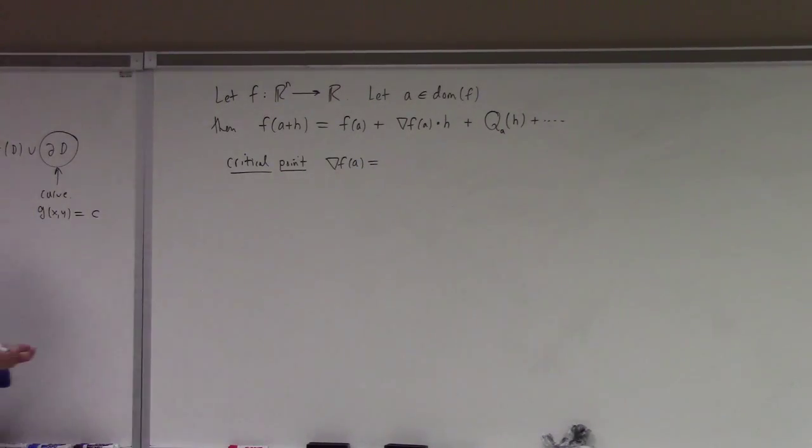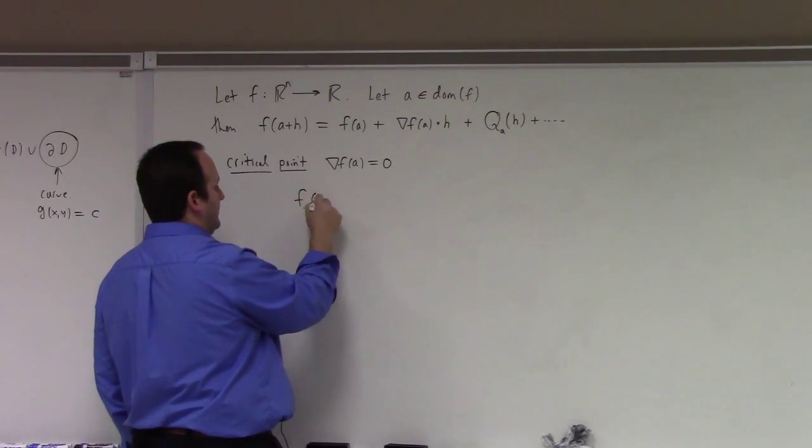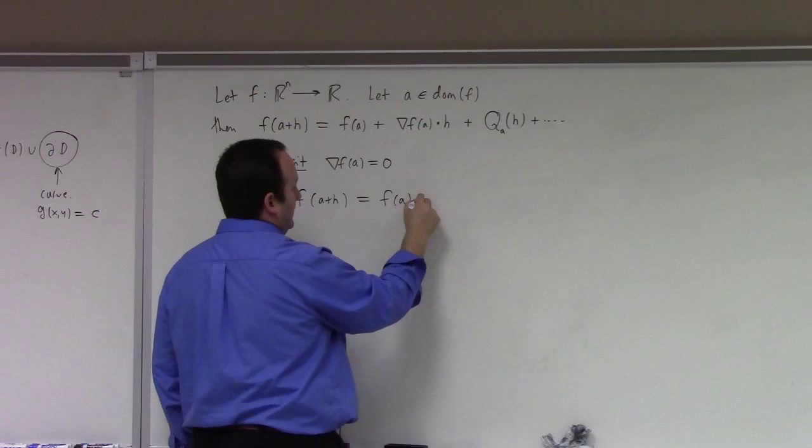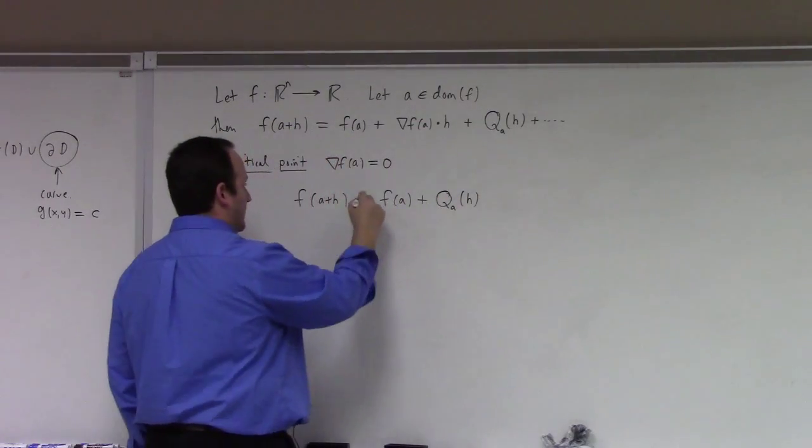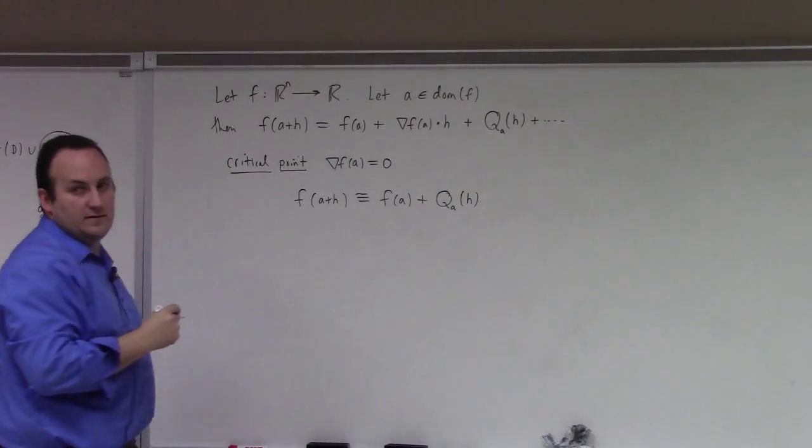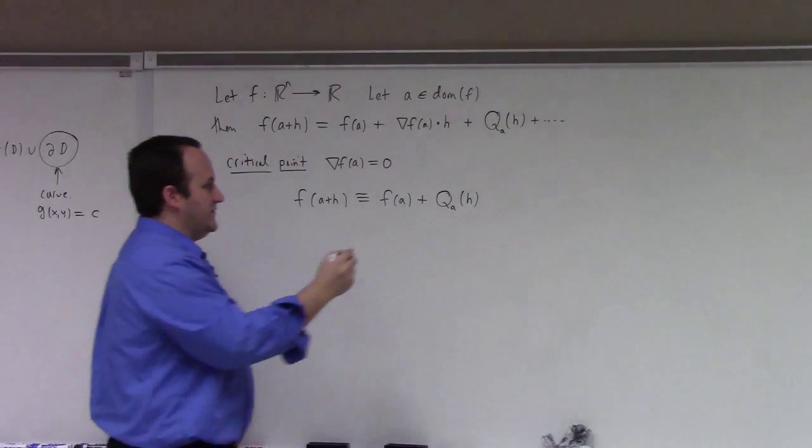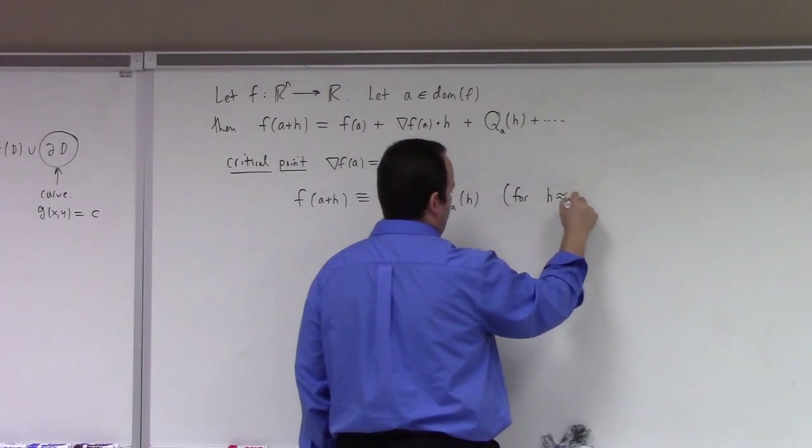Okay, so then what? So if this is zero, that means that the function, F of A plus H, is equal to F of A plus the quadratic piece, Hessian piece, approximately.